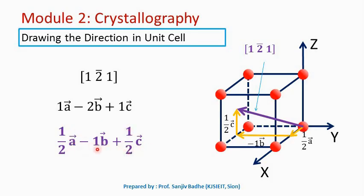The y-component is negative, so in order to show the negative y-component, we will shift the origin accordingly. The origin is shifted in the y-direction. So this is our positive x-axis, this is positive y-axis, this is negative y-axis, and this is positive z-axis. Now starting from the origin, we draw vector 1/2 a-bar, then add minus 1 b-bar, then plus 1/2 c-bar. This is the end point, and we draw a vector from origin to this end point. This vector is our direction [1 2-bar 1].